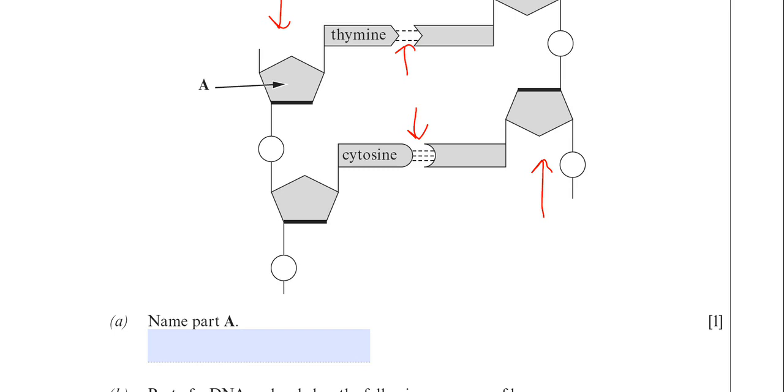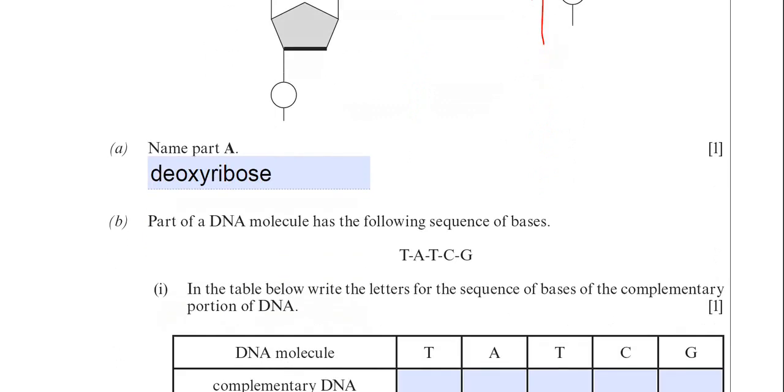The examiner would have allowed pentose sugar but I still think deoxyribose is better because RNA also has a pentose sugar but that's different, that's ribose sugar. So I think the best answer there is deoxyribose. Moving on then.